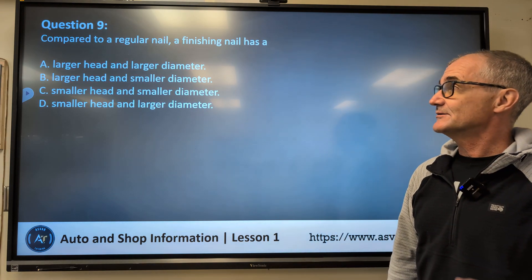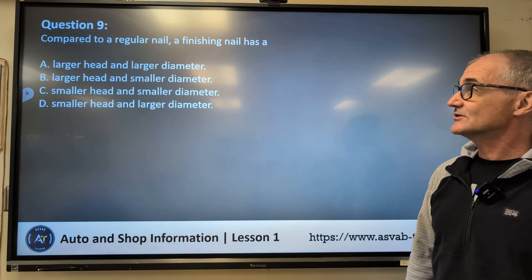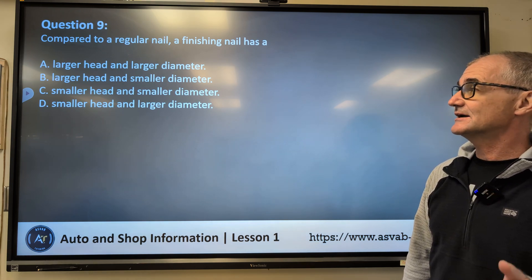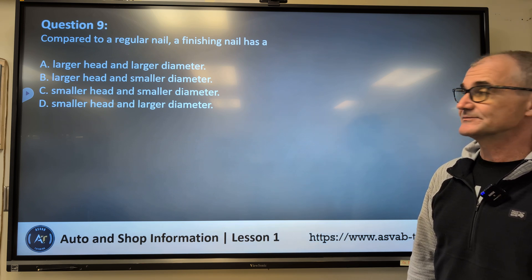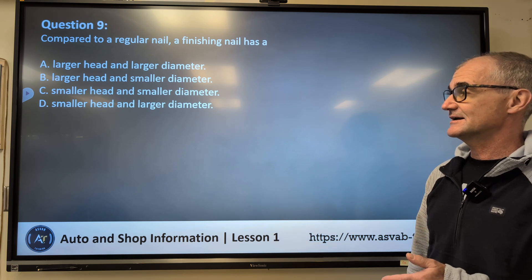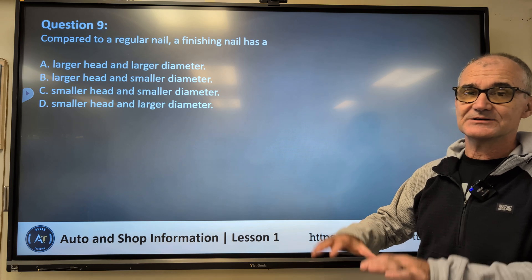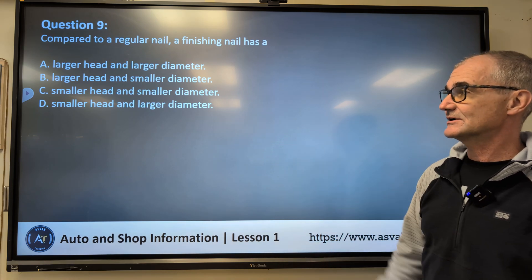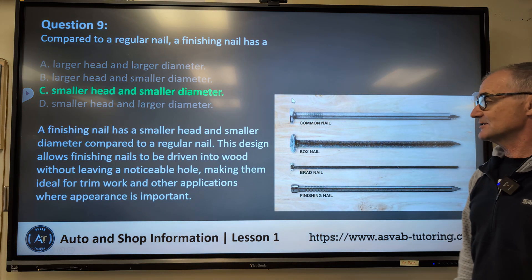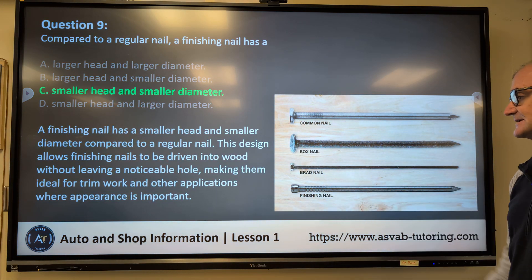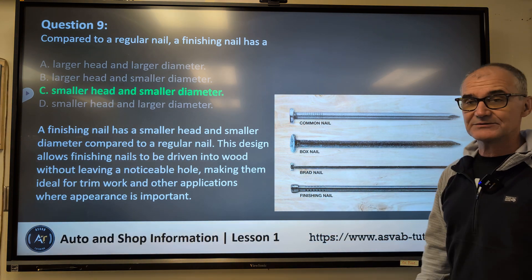Question number nine: Compared to a regular nail, a finishing nail has — A, larger head and larger diameter; B, larger head and smaller diameter; C, smaller head and smaller diameter; D, smaller head and larger diameter? If it's for finishing, you're not going to want to see it, so it has to be smaller all the way around. Answer C — smaller head, smaller diameter. Here's the finishing nail — no real head on it, so you can recess it into the wood and cover it up with wood filler.